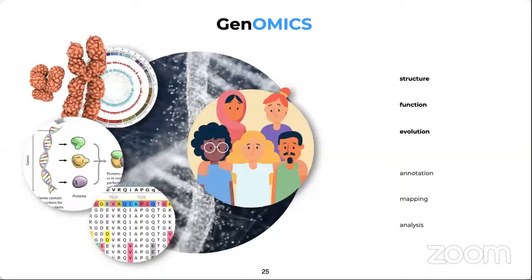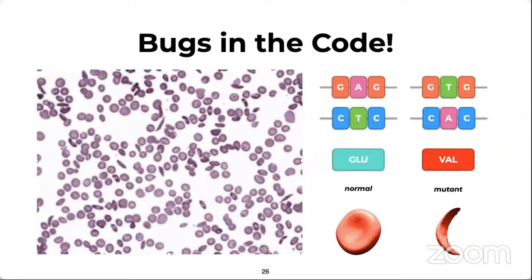Genomics aims at the collective characterization and quantification of an organism's genes and their relationships and influence on the organism. As a result of many genomics efforts, we can now detect differences — harmless ones or those that can lead to serious issues. The whole study of genomics is focused on identifying specific differences, termed variants, mutations, or polymorphisms, which can occur as a result of copying DNA too many times or due to various stresses interfering with regulatory mechanisms.